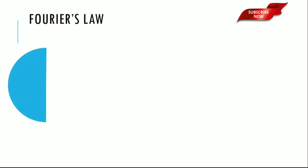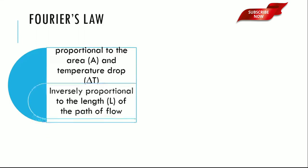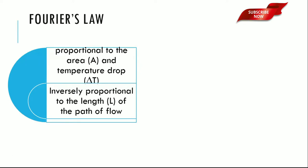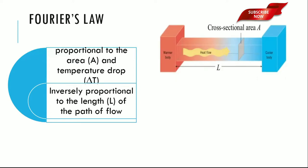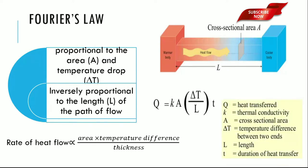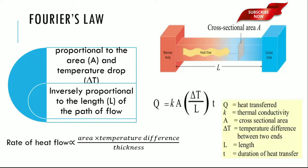Fourier's law states that the rate of heat flow through a uniform material is proportional to the area and temperature drop, and inversely proportional to the length of the path of flow. In this, Q is heat transfer, K is thermal conductivity, A is cross-sectional area, delta T is temperature difference between the two ends, L is the length, and t is the duration of heat transfer.